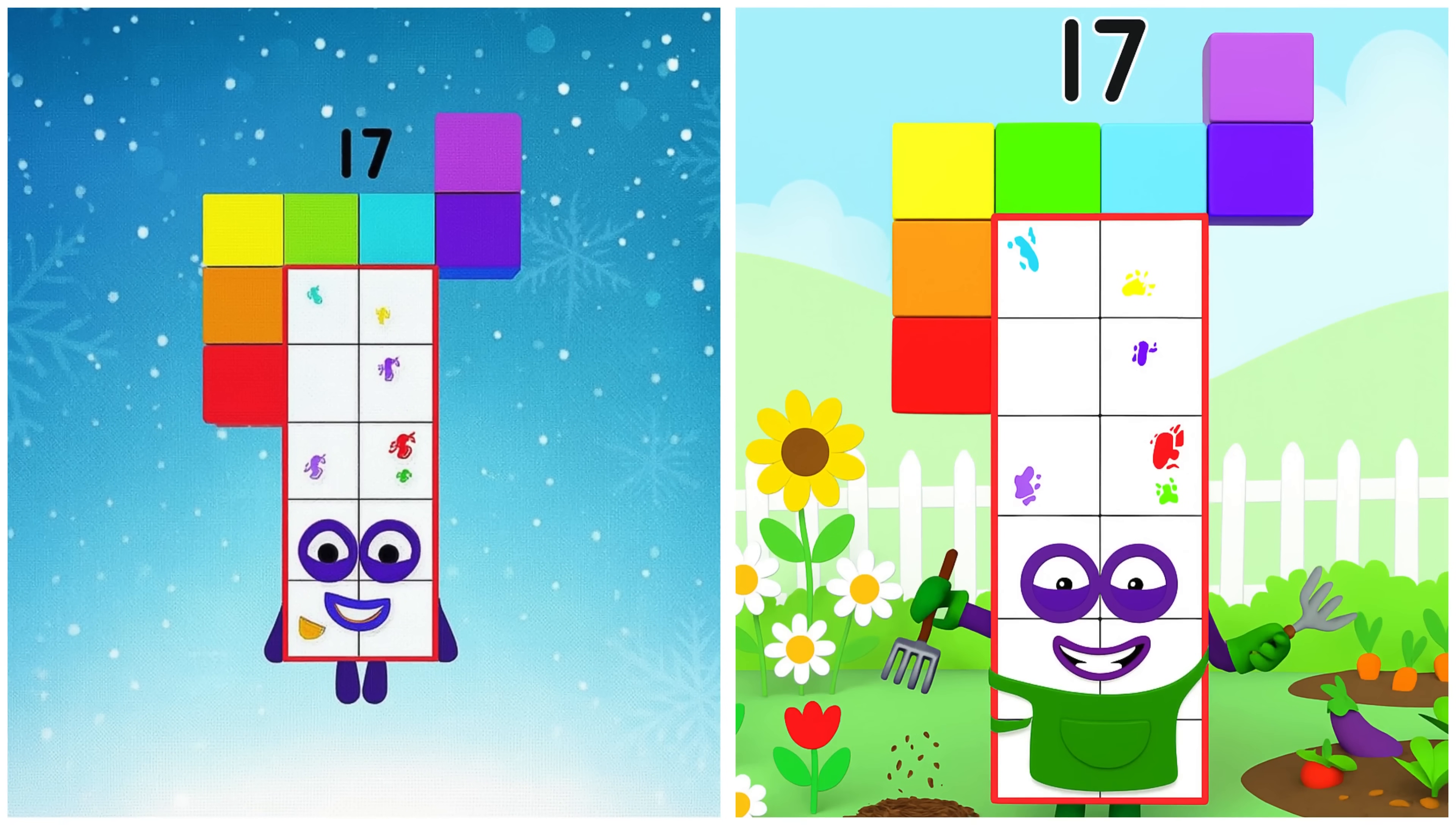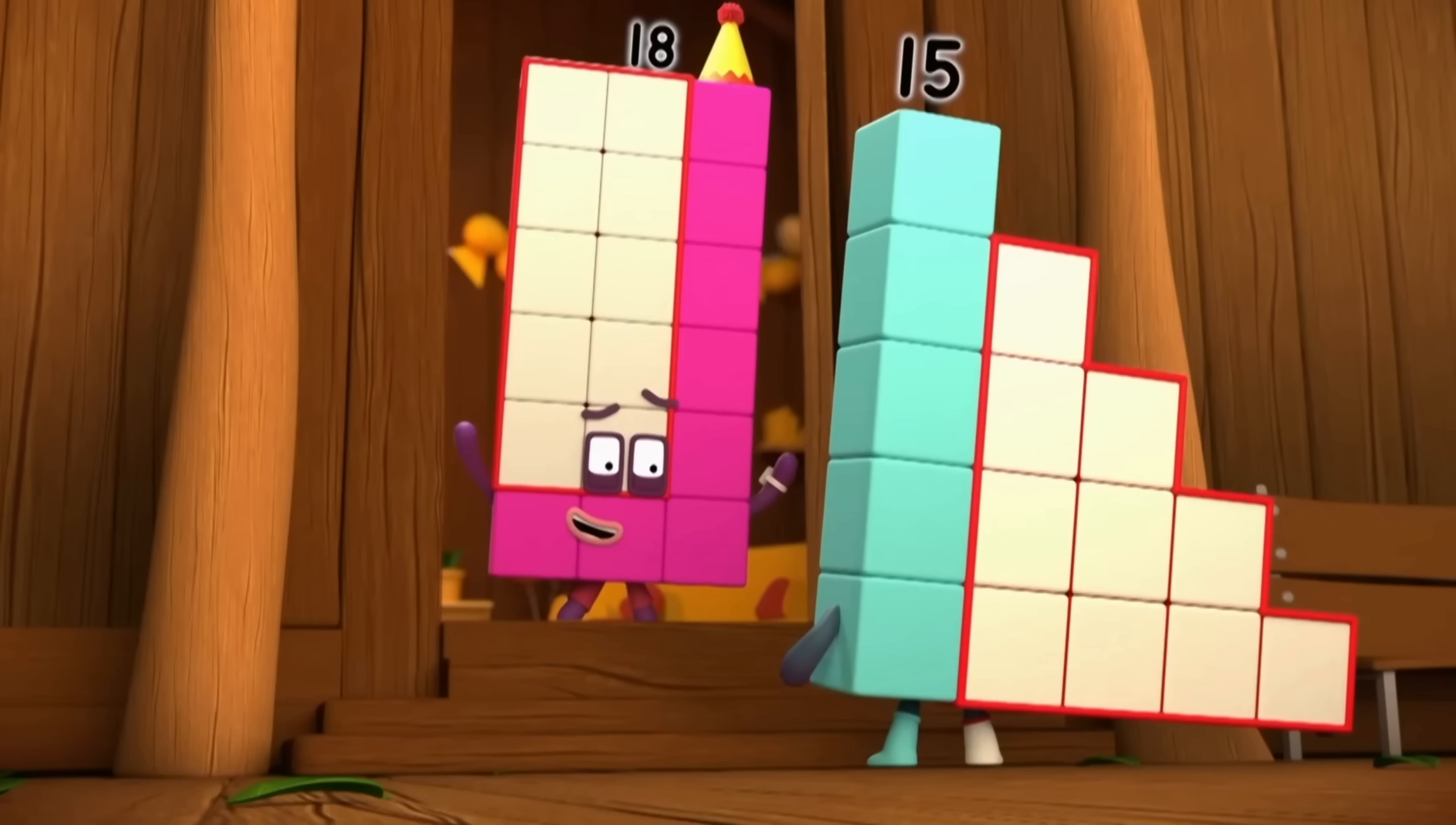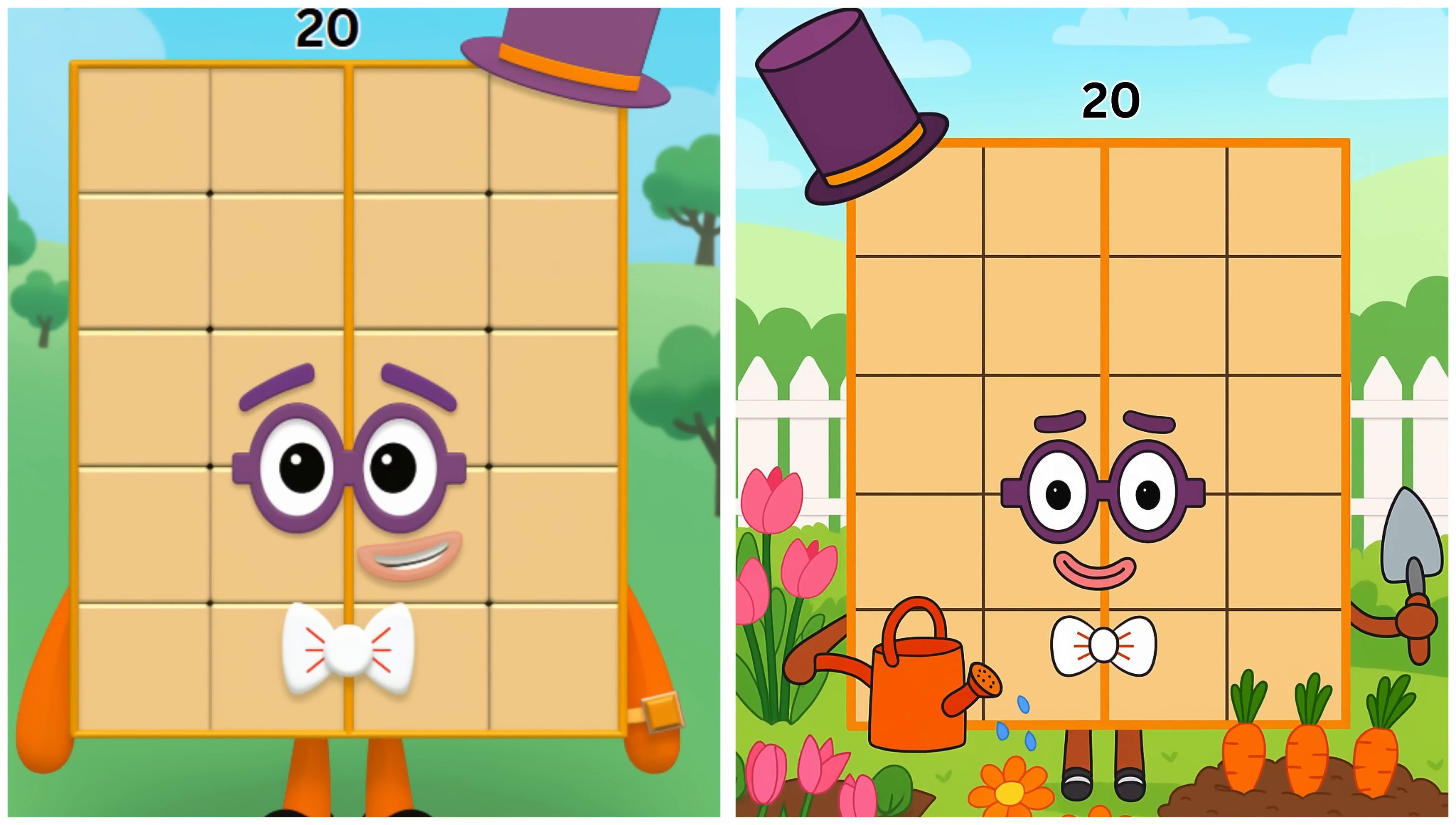Seventeen. Seventeen's trimming bushes neat. Now there's a surprise. Eighteen. Eighteen's pulling weeds away. Babe. There you are. Everyone find a place to hide. Nineteen. Nineteen's gathering herbs to dry. Twenty. Twenty's sharing fruits with friends.